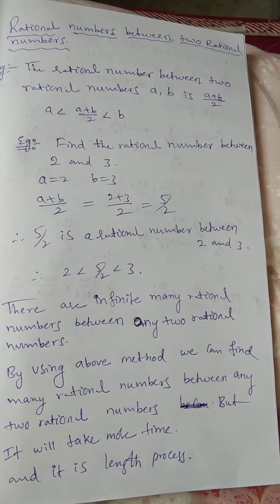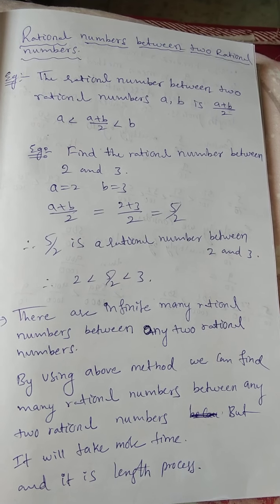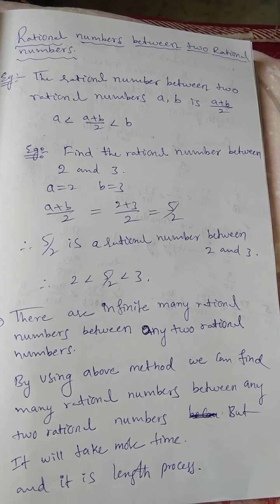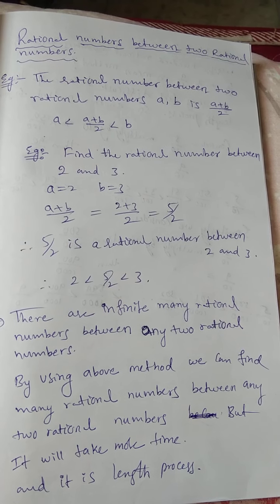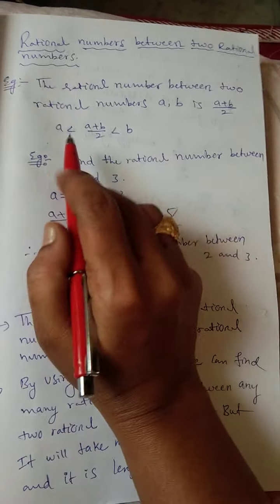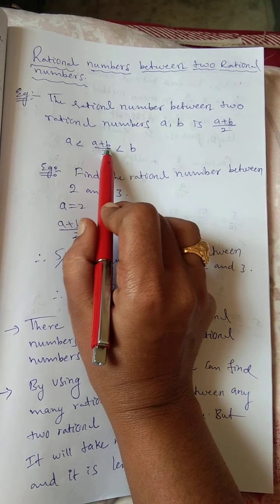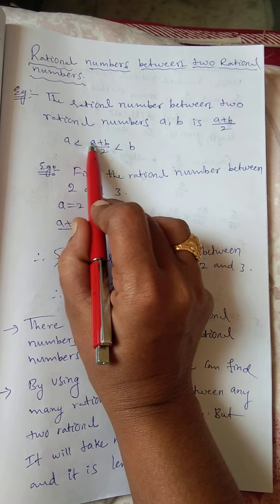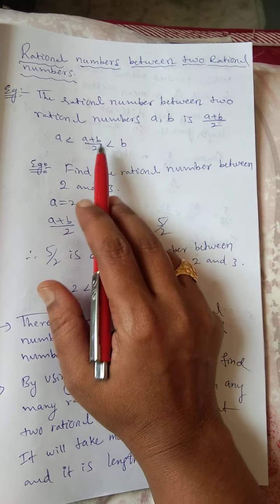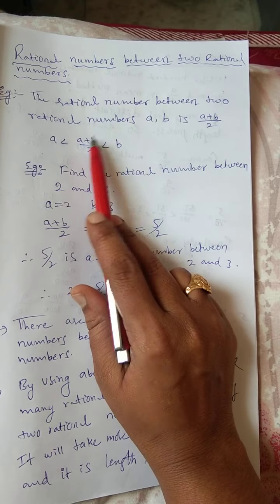By using one formula, we can find that. If you take any two rational numbers A and B, the rational number between A and B is A plus B by 2. If you take any two rational numbers, the formula for the number in between them is A plus B by 2 — that means the average, the sum of the two numbers divided by 2.